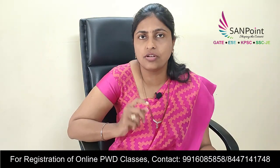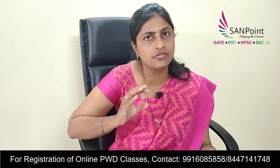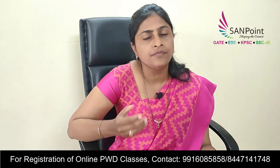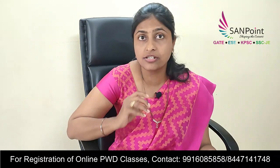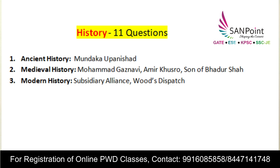The next subject is history. Eleven questions appeared from history. History is classified into three stages: ancient history, medieval history, and modern history. Questions are usually distributed among these three, but questions from ancient history are slightly fewer. From ancient history, questions appeared on Mukunda and Upanishads. From medieval history: Muhammad Ghazni and Amir Khusro. From modern history: subsidiary alliance and the Wood's Dispatch.